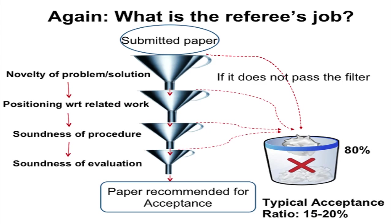Here is a picture to help you remember this. Papers are submitted into a set of conical filters, and the referee's job is to first see whether it passes the filter of novelty — in the problem or in the solution. If your paper does not pass that filter, it goes into the trash. Subsequently, the referee looks at whether it passes the positioning with respect to related work, and those that do not pass exit. Then only does the referee look at soundness of procedure, and even that is not enough — you also have to provide the evidence, which is the soundness of your evaluation. Only when all four pieces are present and in this order will the referee be likely to recommend your paper for acceptance.